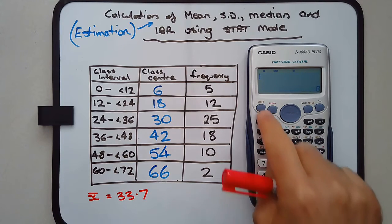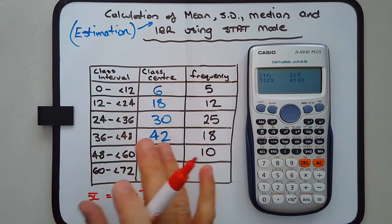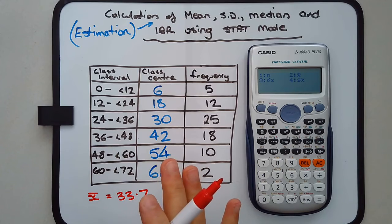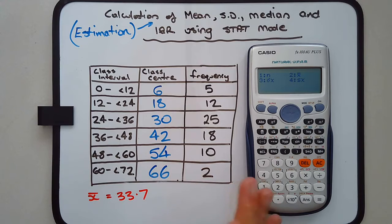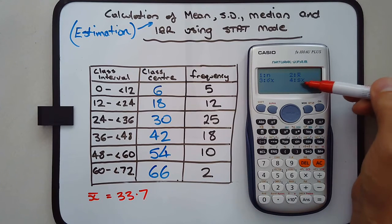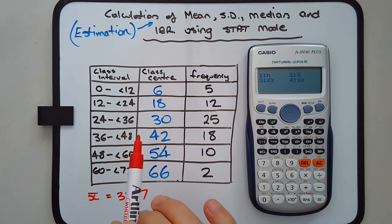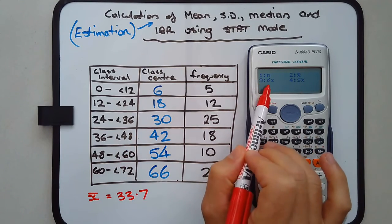Let's work out the standard deviation. We're going to treat this as a population. Just be careful - if the question mentions the word sample or anything that implies it's a sample, then we need to use the sample standard deviation, which is option 4, the S. If it's a population, we use option 3, which is sigma.